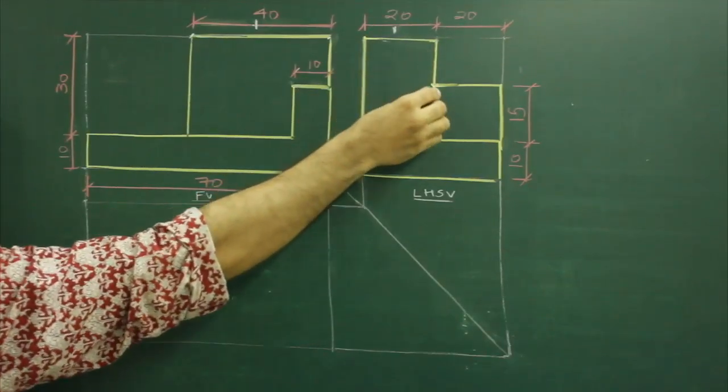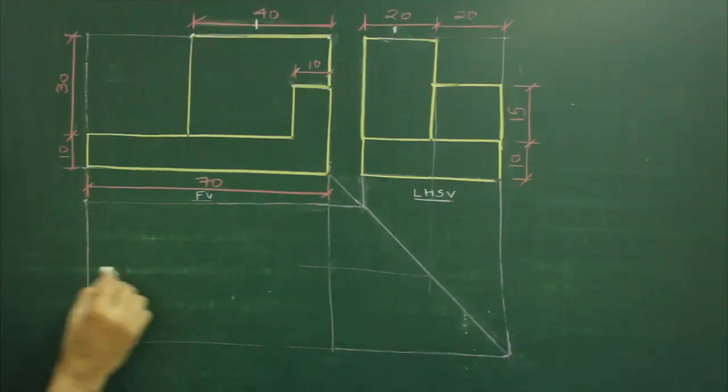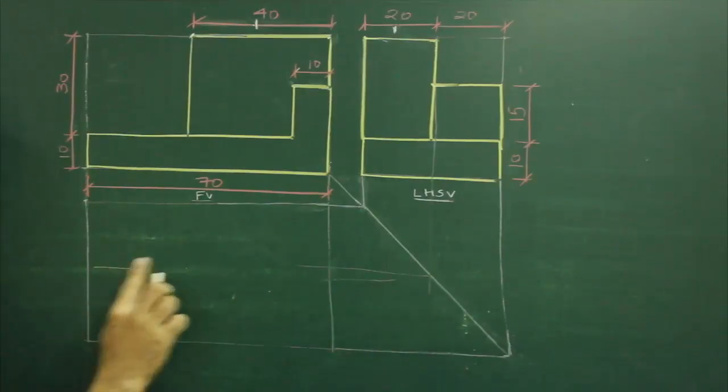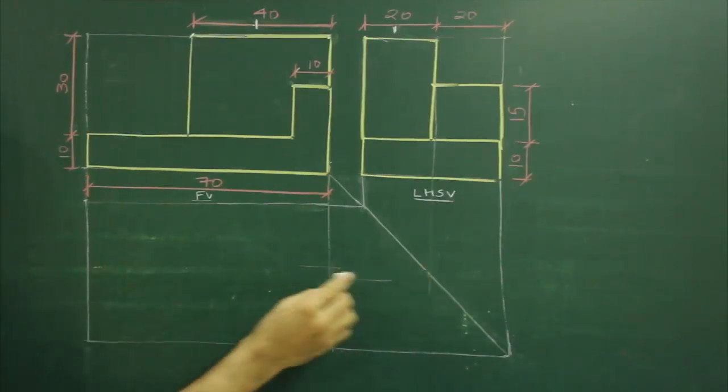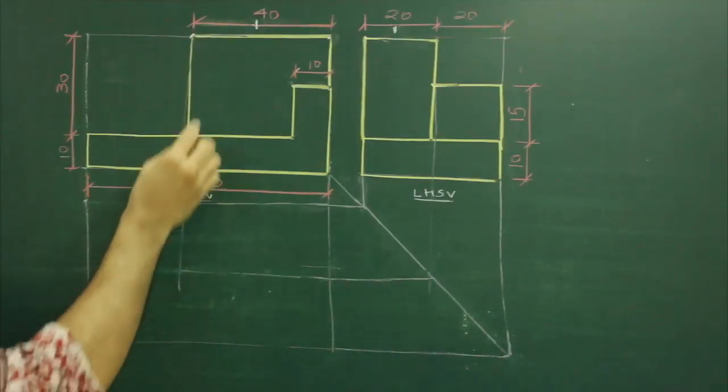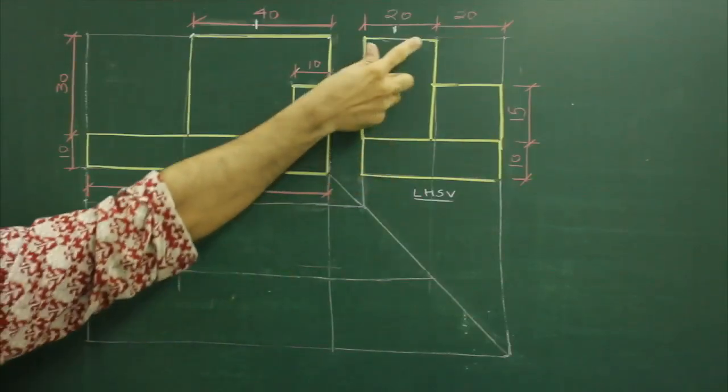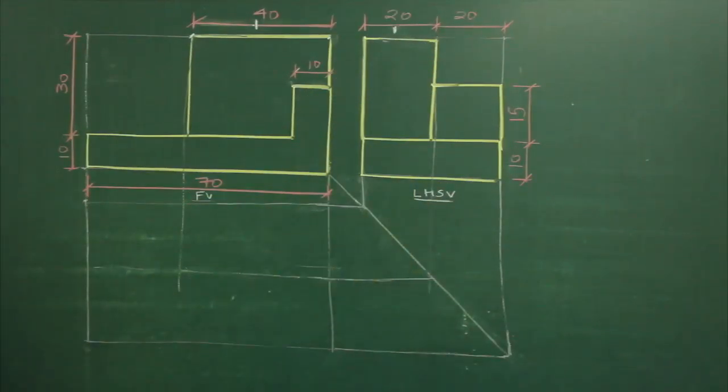So what I am going to do, I am going to project this surface from here and this from here. See this, one you project from here and you project from side. So whatever intersection you get, that would be done.